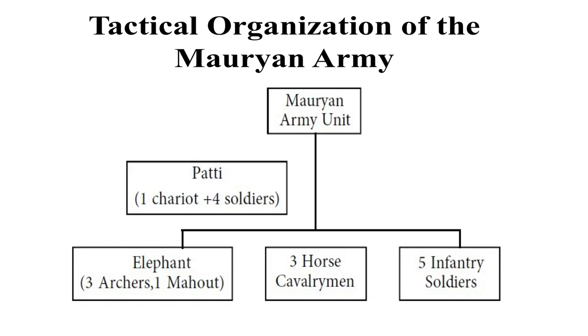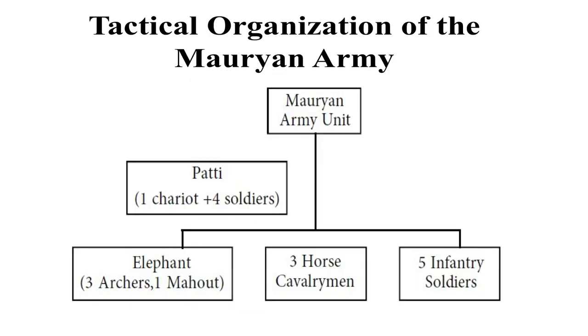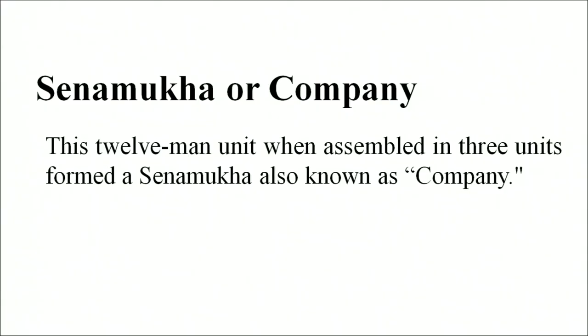The tactical organization of the Mauryan army can best be understood from this picture. The Mauryan army had three components: elephant component, horse component, and infantry component. There were three archers and one mahout for each elephant. For each horse, there were three cavalry horsemen and five infantry soldiers. This unit was known as Patti. When three such units were assembled together, it was termed as Senamukha, also known as a Company.